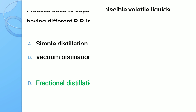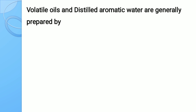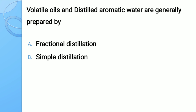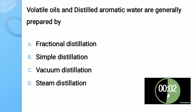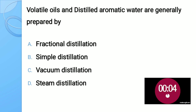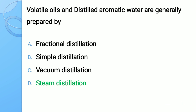Question number thirteen: Volatile oils and distilled aromatic waters are generally prepared by — options: A) fractional distillation, B) simple distillation, C) vacuum distillation, D) steam distillation. The correct answer is steam distillation — steam distillation is generally used for volatile oils and distilled aromatic water preparation.